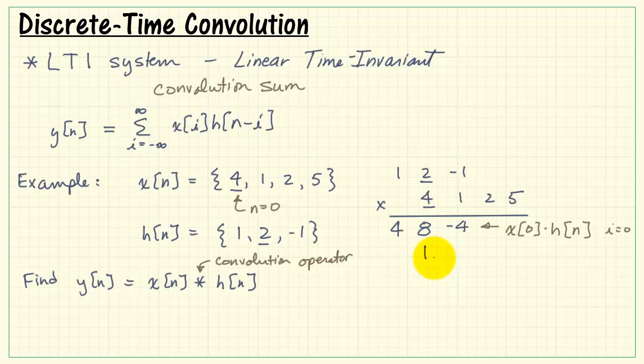We have 1 times 1, 1 times 2, and then 1 times negative 1. And this corresponds to the case of x of 1 times the shifted version of the impulse response. So that's why we have this stagger going here. We need to have the shifted impulse response. Alright, let's keep this up.